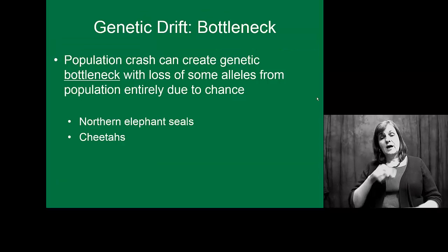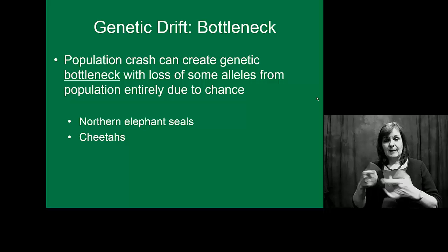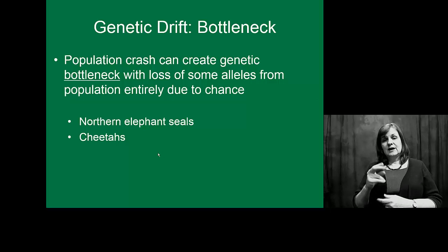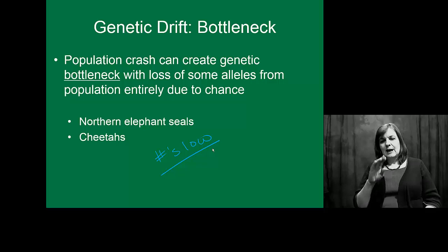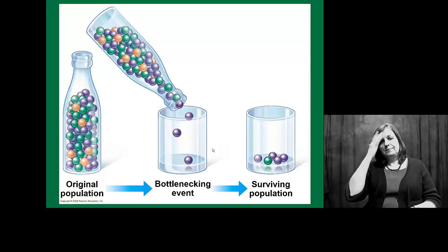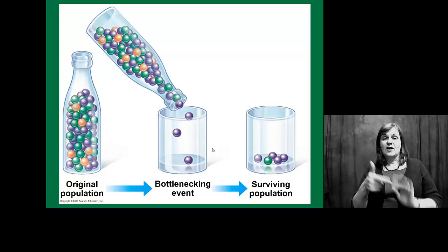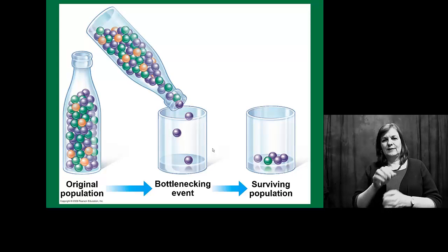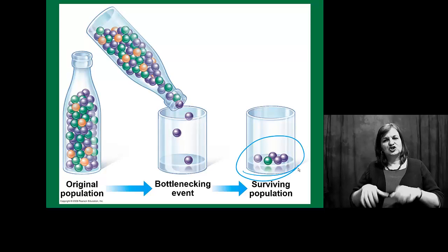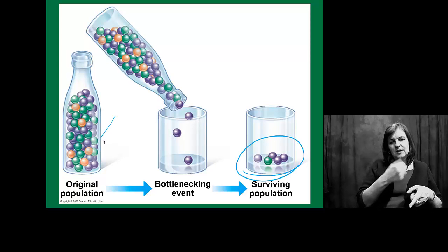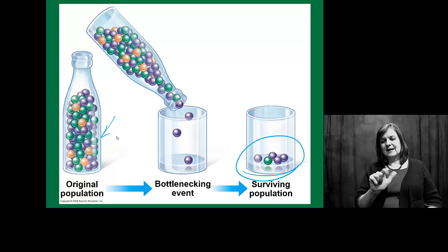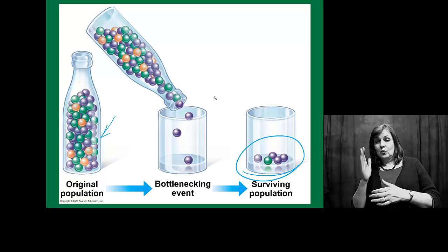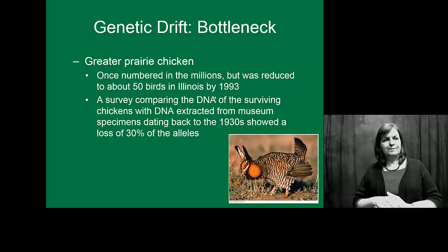There are natural occurrences of these bottleneck populations. We see it in seals and in cheetahs. Their numbers are very low, and when numbers in a population are low, we see bottleneck effects happen all the time. You can look at this with beads — pouring out a certain number, and by random chance, the surviving population is only purple and green when originally we also had some orange. If you think about these as alleles, what's the possibility that an allele is going to make it through a bottleneck event?